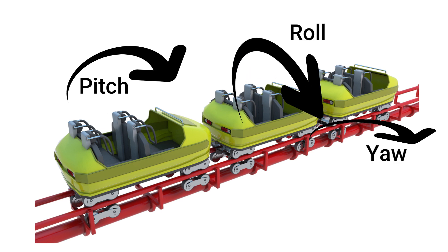Pitch is going up and down hills, which we have along with surge. But the coaster doesn't roll — the tracks are always parallel — and it doesn't turn, so yaw is also constrained. That gives us two degrees of freedom.